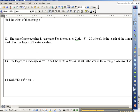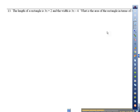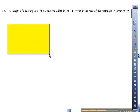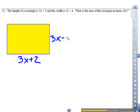Number 13. The length of a rectangle is 3x plus 2 and the width is 3x minus 4. What is the area of the rectangle in terms of x? I have a rectangle. The length is 3x plus 2 and the width is 3x minus 4. What is the area of the rectangle?